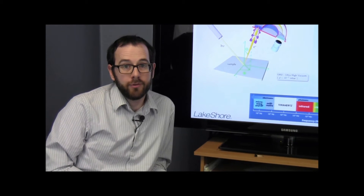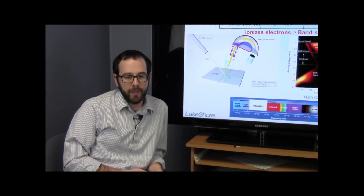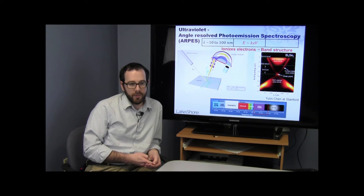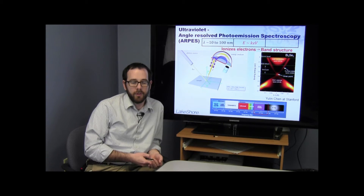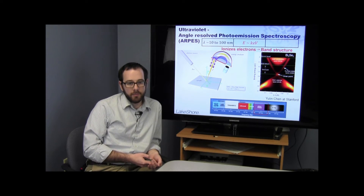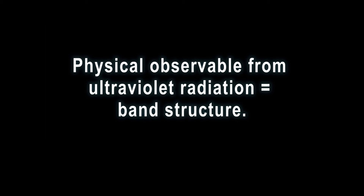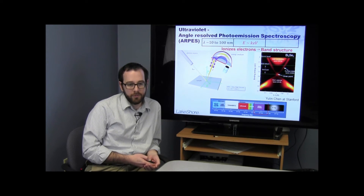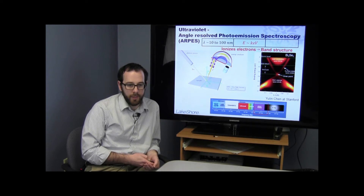Going down in energy from X-ray diffraction into the ultraviolet regime, the UV region has a longer wavelength and is less energetic than X-rays. While we're unable to resolve atomic structure, ultraviolet radiation actually has enough energy to rip electrons off atoms inside of the crystal. By using ultraviolet radiation to eject electrons from a material, we're able to derive the energies of those electrons and actually derive the band structure of the material. Understanding the electronic structure and band structure is really important when it comes to understanding how a material is going to operate.